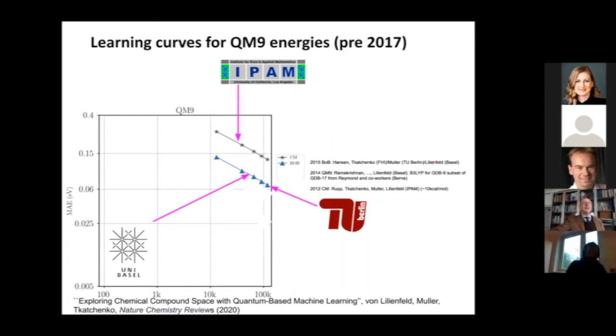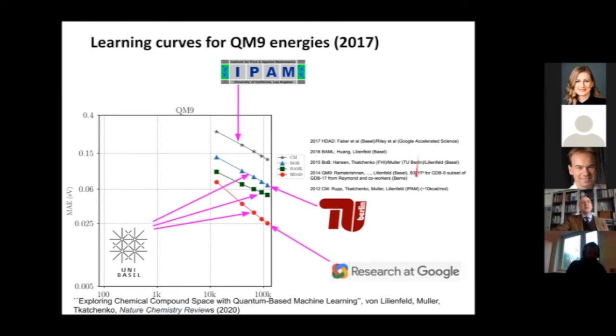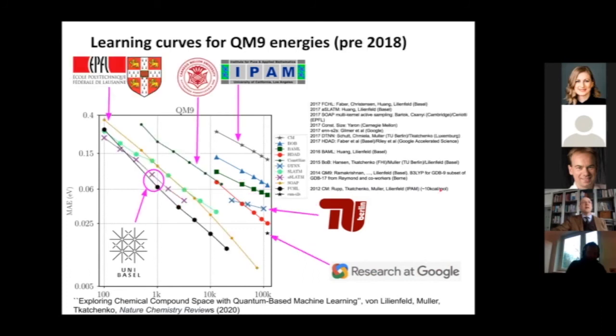The Coulomb matrix called CM here is one of these representations. This is the first one we started with, and you see it's a linear curve, you do have learning. But with this representation, BoB, it's just a different representation, same kernel, same dataset, you improve the offset dramatically. This kind of observation continued to be true for further representations. This is a force field-based representation. Then there was a neural network by Google, then we had a renewed neural network.